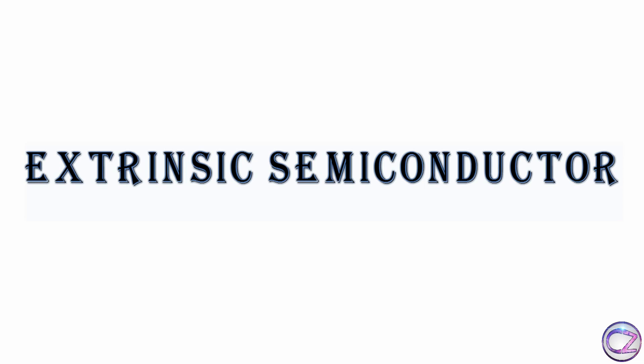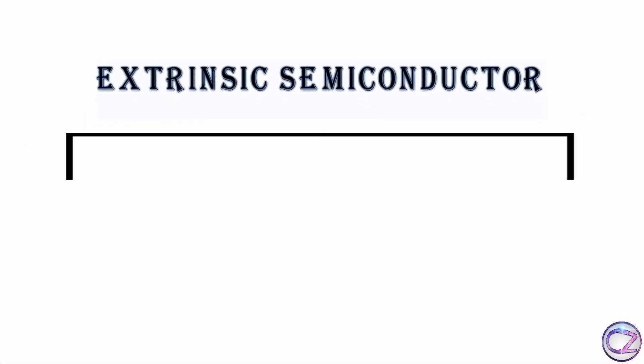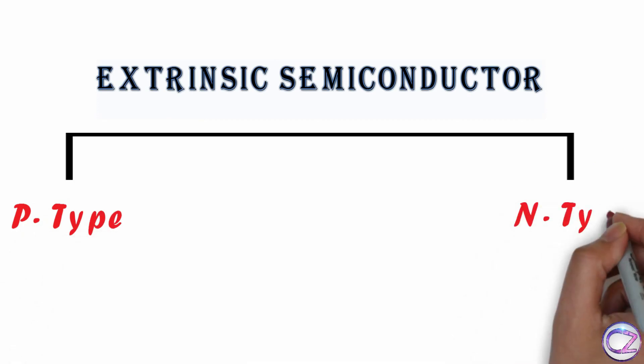We need some doping to get from Intrinsic to Extrinsic Semiconductor, which I told in my last video. There are two kinds of extrinsic semiconductors: p-type and n-type semiconductor.